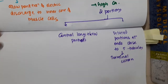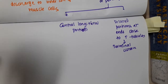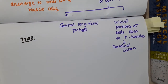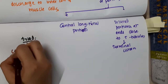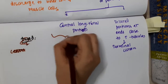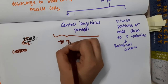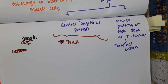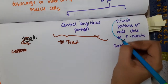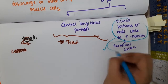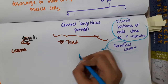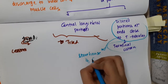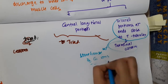The triad refers to the central longitudinal portion with the dilated tubules at each end. The dilated portions, or terminal cisternae, are the storehouse of calcium ions.